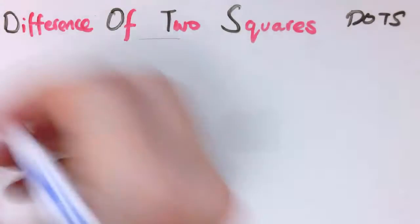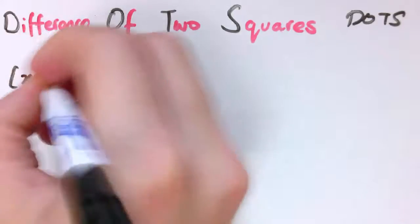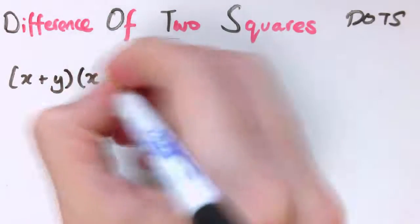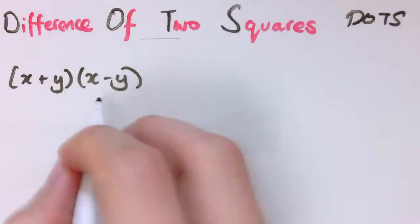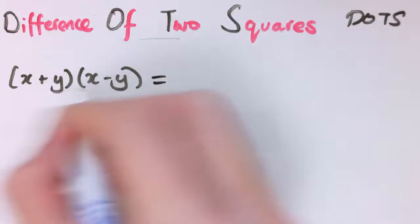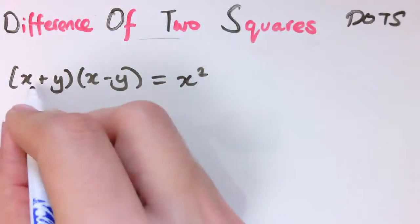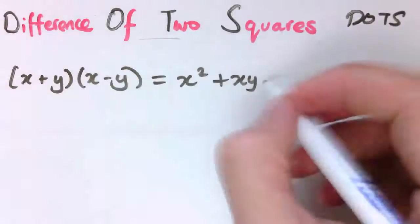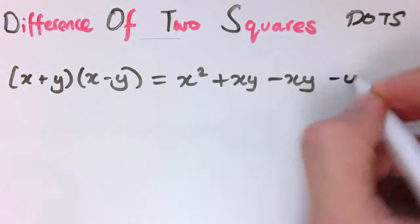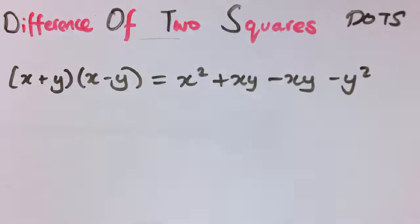Now, what it is, is if you multiply out something like x plus y times x minus y, what you'll see happening is this. You get x times x, that's x squared, now I get plus x times y, then I also get minus x times y, then I get minus y squared. So what you can see is that x times y here minus x times y cancel out and we're left with x squared minus y squared.